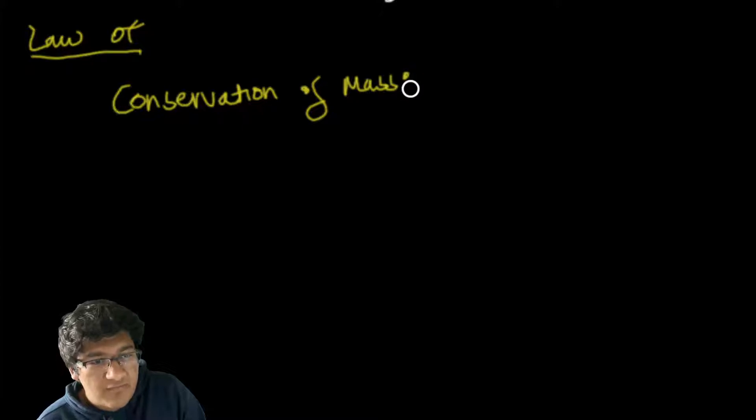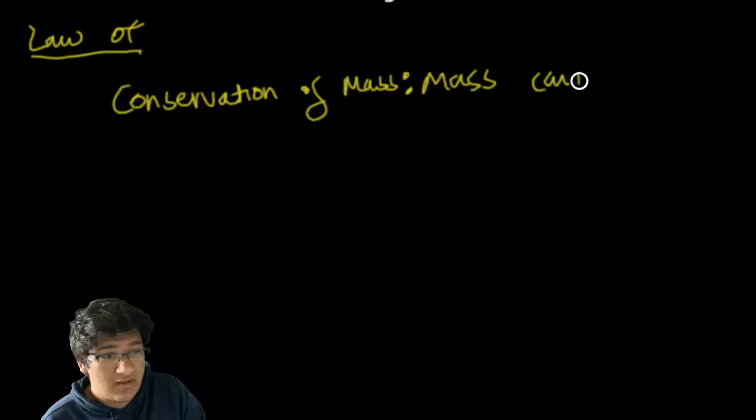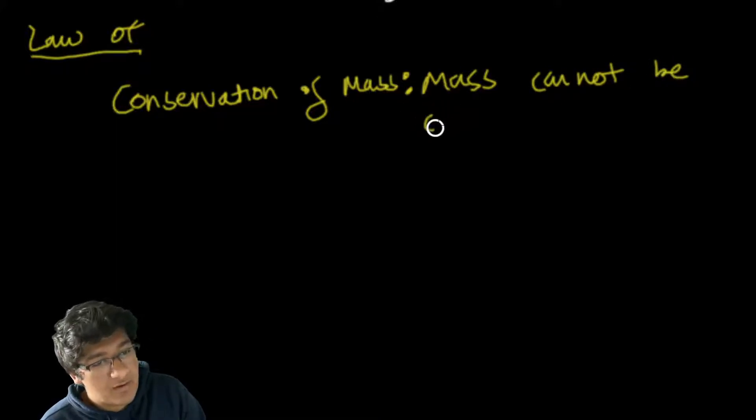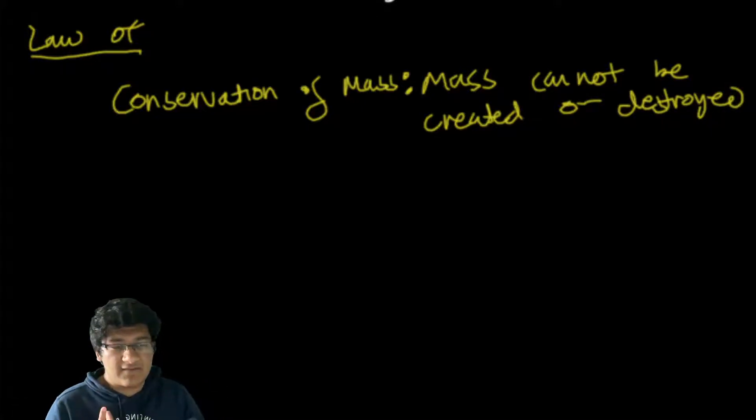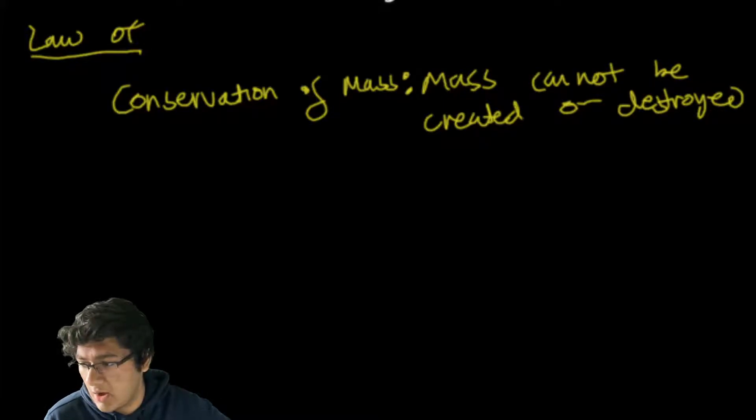Conservation of mass means that mass cannot be created or destroyed. What this exactly means in chemistry is that if I'm having a reaction, the mass of the reactants should equal the mass of the products. That's how stoichiometry works - we have to take certain proportions and translate them so that mass is still equal.